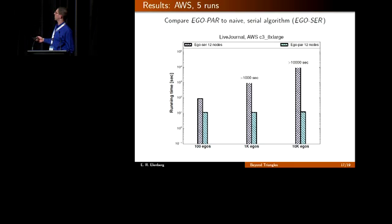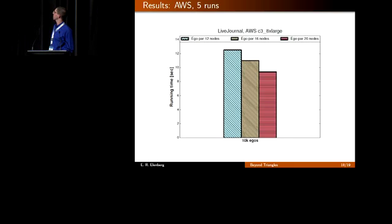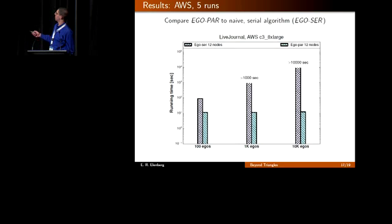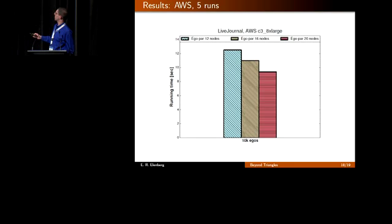We can blow up the right-hand portion of this graph. All of these results are for 12 nodes. If we scale and increase the cluster size to 20 nodes, we get additional speed-ups. This means that our EgoPair algorithm scales well with increasing cluster size on the LiveJournal graph.